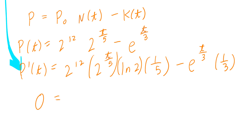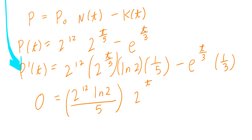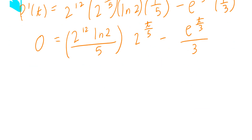So we copy 2 to the power of 12 times ln of 2 divided by 5 — put this in brackets — that's a number times 2 to the power of t divided by 5, minus e to the power of t divided by 3 times 1 third. Set this equal to zero. At this point you've got to be very careful. There are many ways of doing this — I'm going to show you one method. To solve manually, isolate for t.